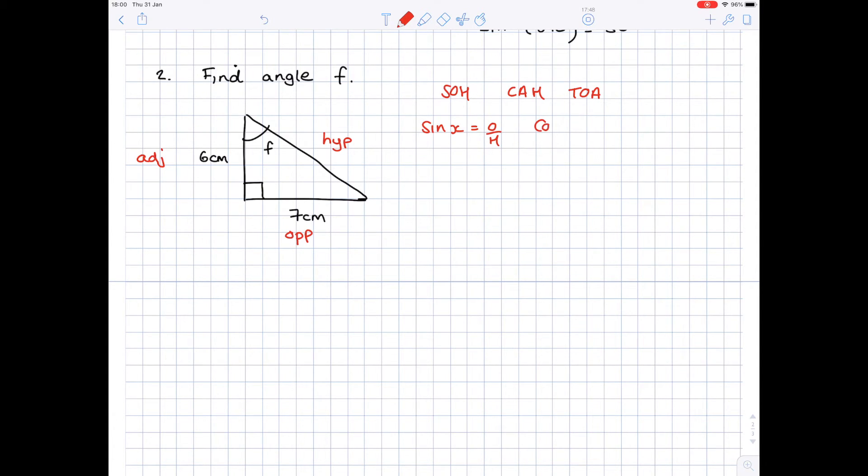Writing SOH CAH TOA again, sine x equals O over H, cos x equals A over H, tan x equals O over A. We have six centimeters associated with adjacent, seven centimeters is opposite, so we've got an O and an A situation, which means tan x is the trig function we want to be using.